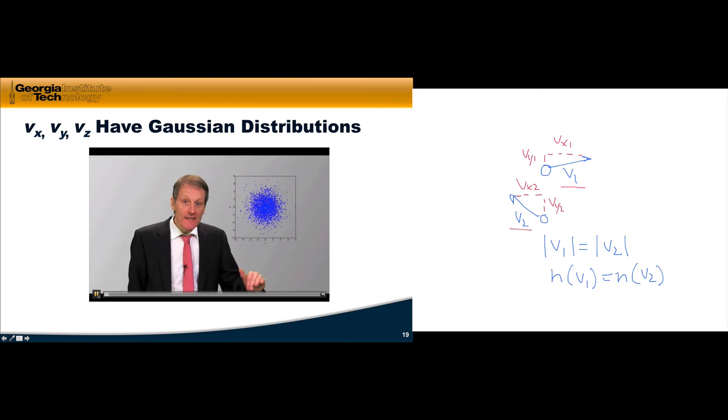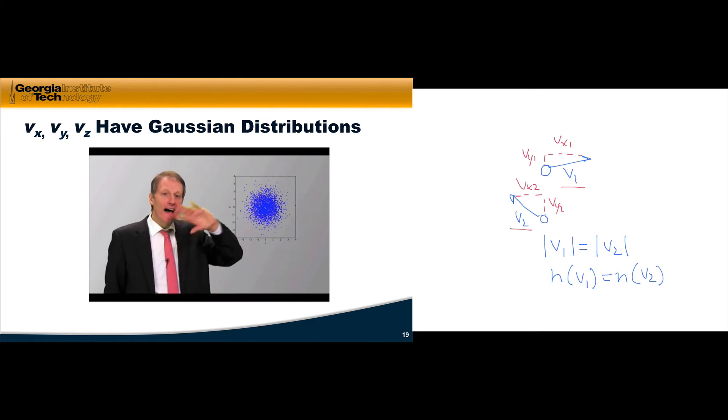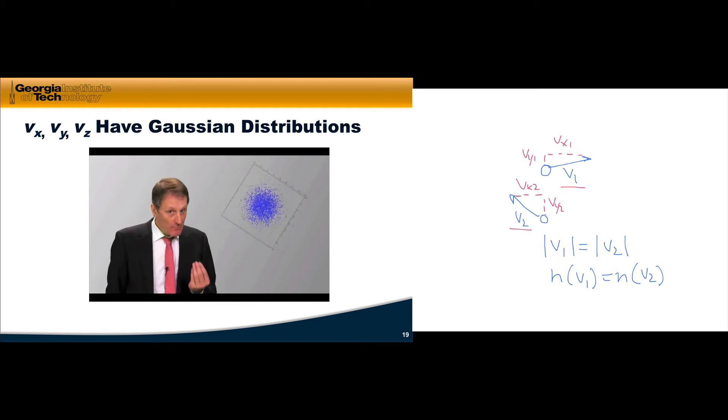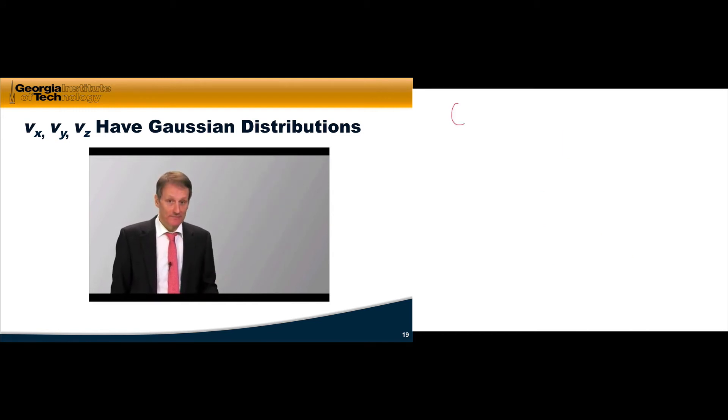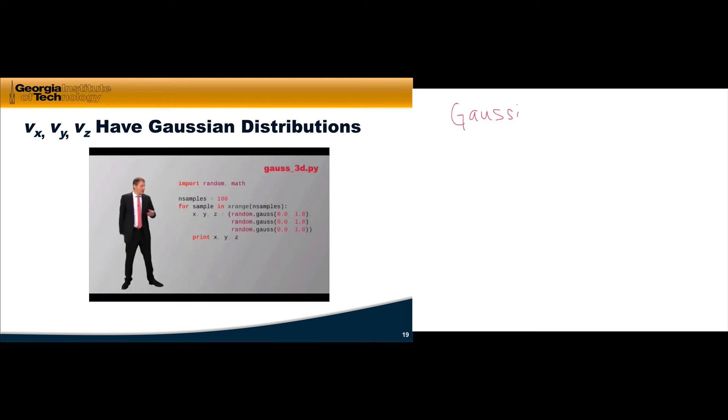Gaussians are unique in that independent distributions in x and y give an isotropic distribution in two dimensions. This property is general for Gaussians in any dimension. The three-dimensional case is shown here in Gauss3D.py. Each point is a vector x, y, and z, and all three are independent Gaussians.